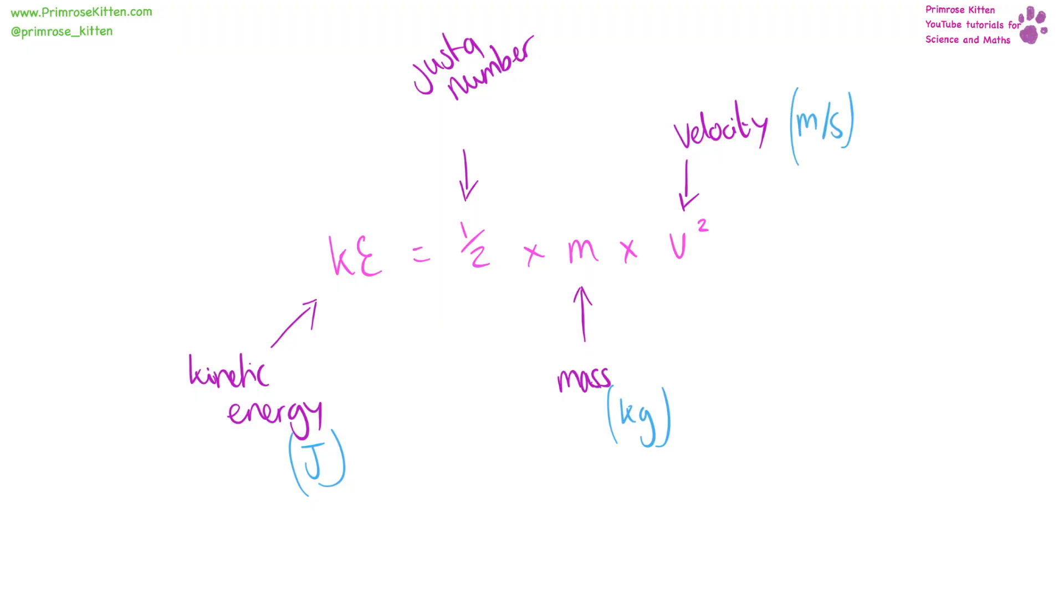To work out kinetic energy, that is half times mass times velocity squared. With kinetic energy being measured in joules, half is just a number so we don't need units for that. Mass is measured in kilograms, and velocity is measured in meters per second. And it's important to note for this one that here is just the velocity squared, not the whole thing.